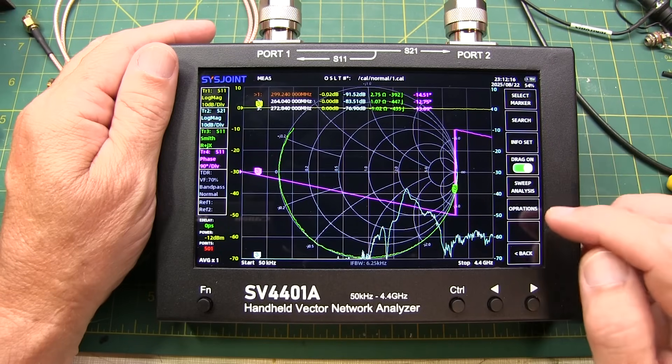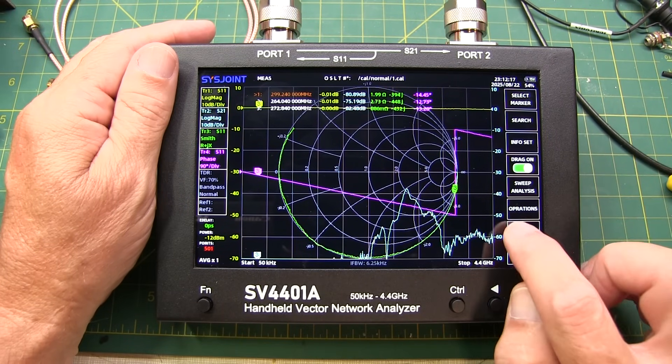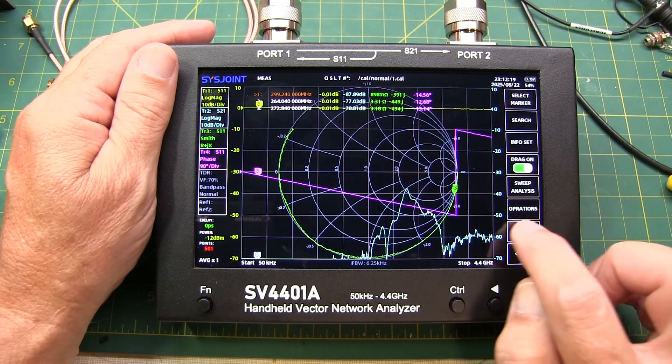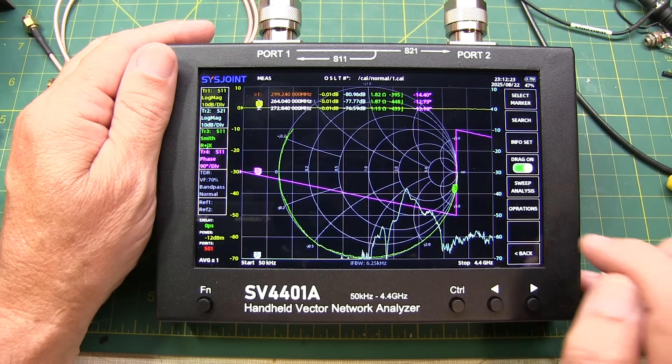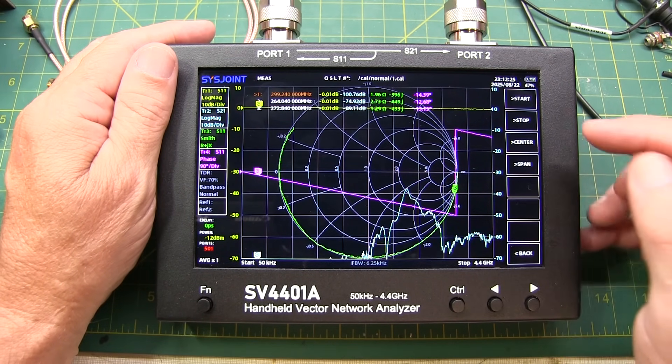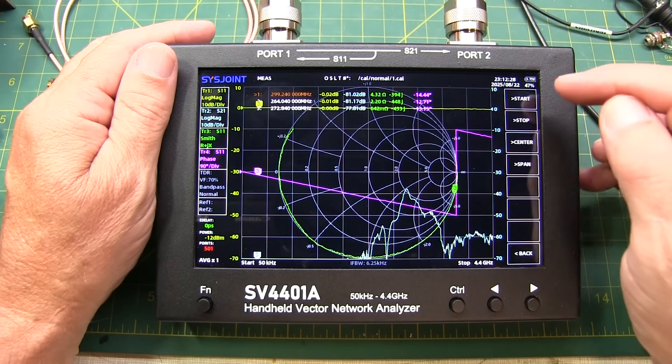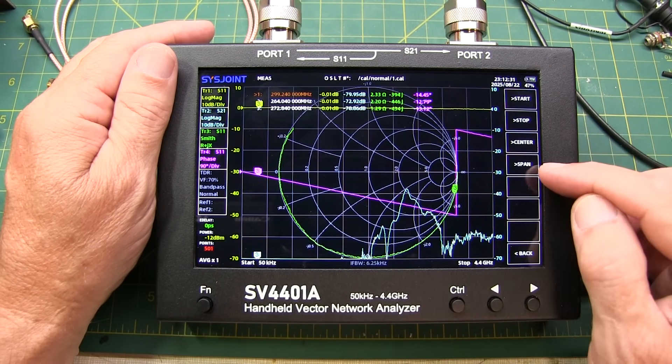And finally, under the marker menu, the operations. Of course, we've got a little bit of a spelling error there. We're missing the E for operations, but maybe it just simply doesn't fit with the font. Operations allows you to take the current marker and use that to set the start, stop, center, or span.